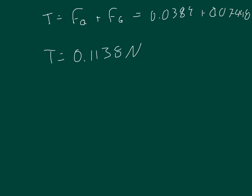Now, the second part of the question says that the string can withstand a maximum tension of 0.18 Newtons. So we're saying that if T is 0.18, that's the maximum. And it wants to know what the radius or what the distance is, the smallest distance that you can have before the string breaks.